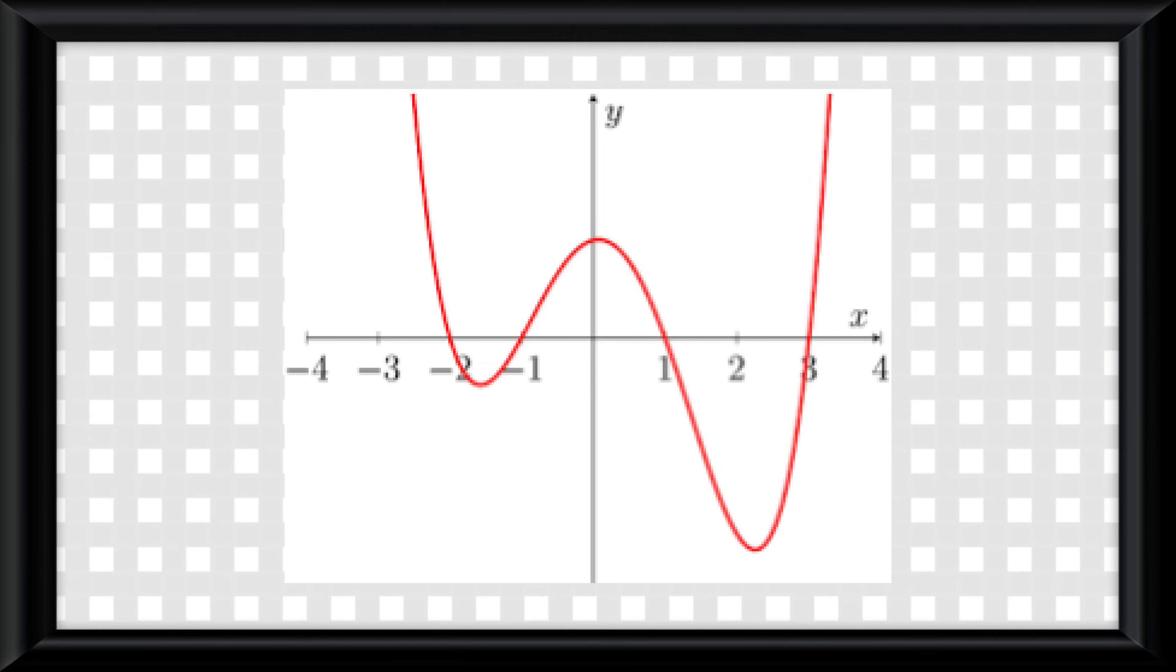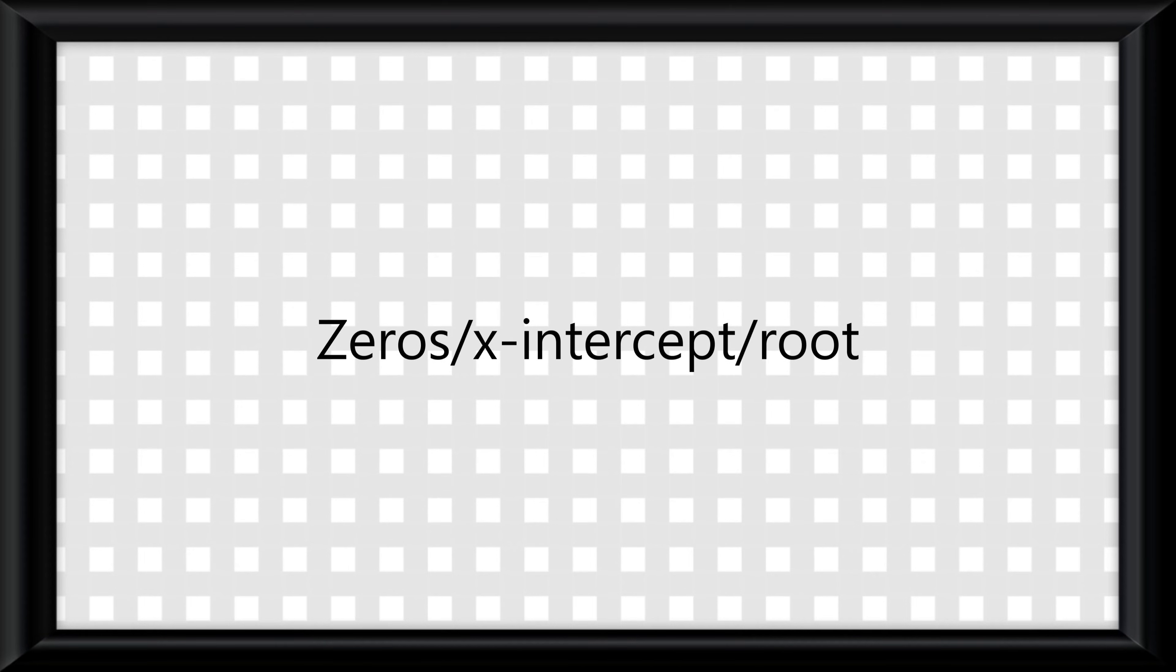First let's talk on zeros. Zeros of a function are whatever x equals when y equals zero. Zeros can also be called x-intercepts or roots.